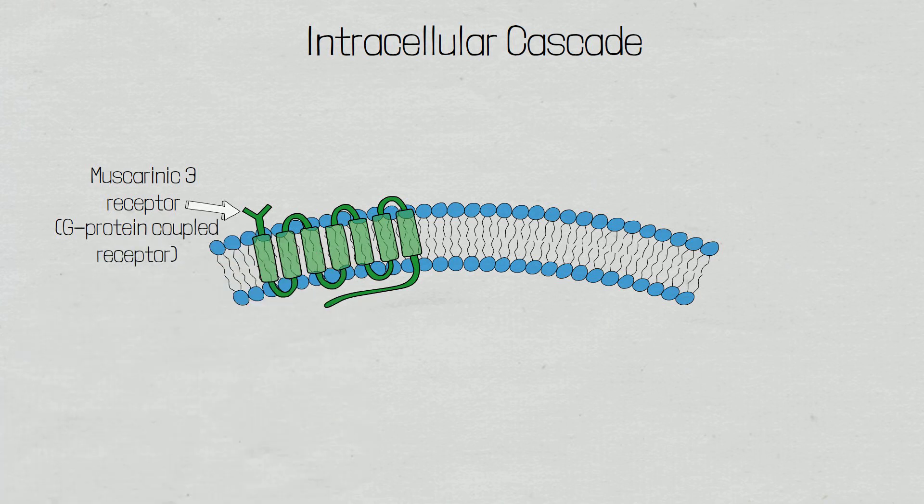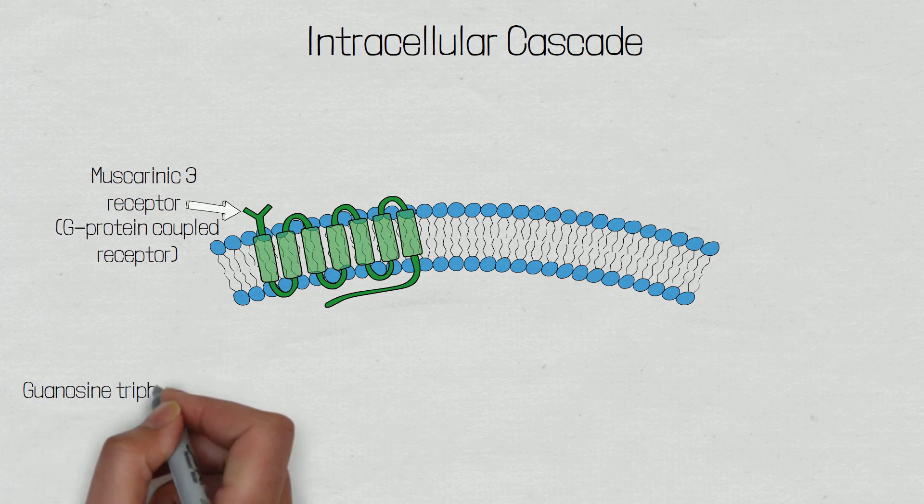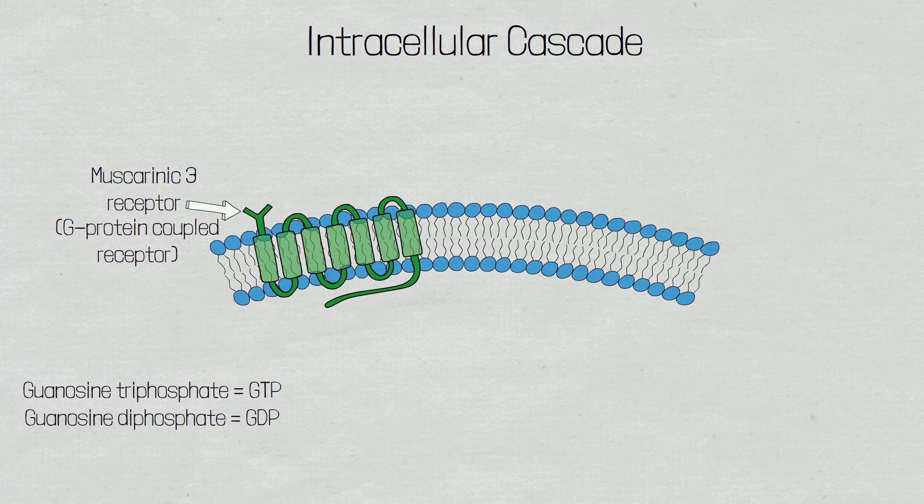These 7 transmembrane receptors are also known as G-protein coupled receptors. As the name implies, these are coupled with G-proteins that are located within the cytoplasm of the cell. These G-proteins have the ability to bind guanosine triphosphate, known as GTP, and guanosine diphosphate, known as GDP.